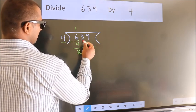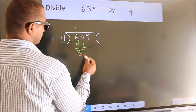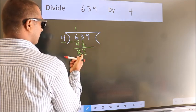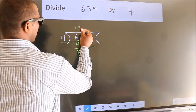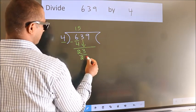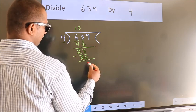After this bring down the beside number. So 3 down. So 23. A number close to 23 in 4 table is 4 fives 20. Now we subtract. We get 3.